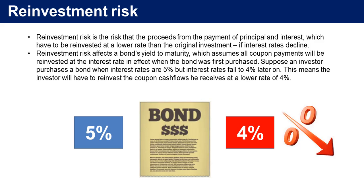Reinvestment risk is greater for longer holding periods. For example, a bond with a 10-year term to maturity will have higher reinvestment risk than a bond with a 5-year term to maturity. Also, bonds with large early cash flows such as high coupon bonds have higher reinvestment risk.